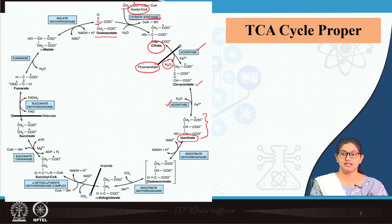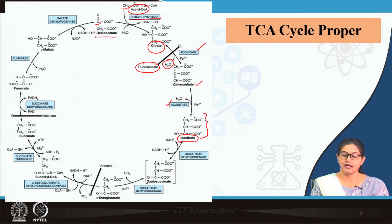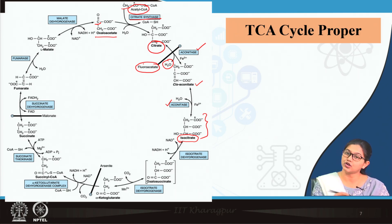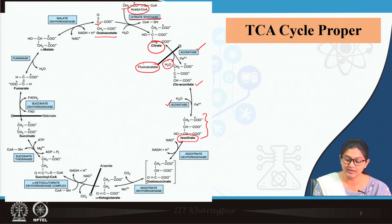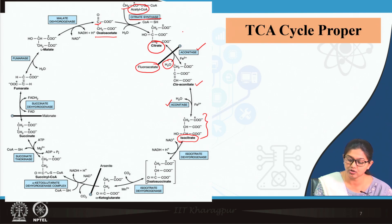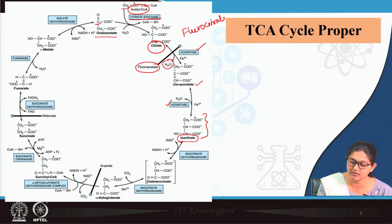Fluoroacetate forms fluoroacetyl coenzyme A, which enters the TCA cycle and combines with oxaloacetate to form fluorocitrate. This fluorocitrate inhibits aconitase. So basically, fluoroacetate undergoes modification to fluorocitrate, which inhibits aconitase.